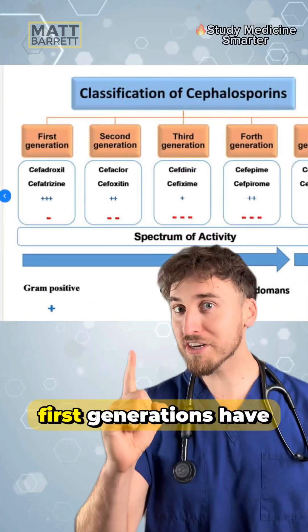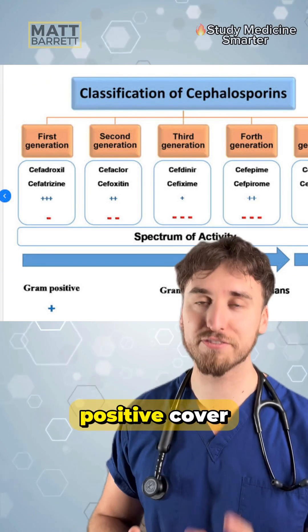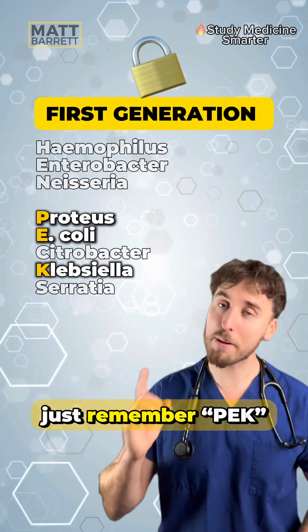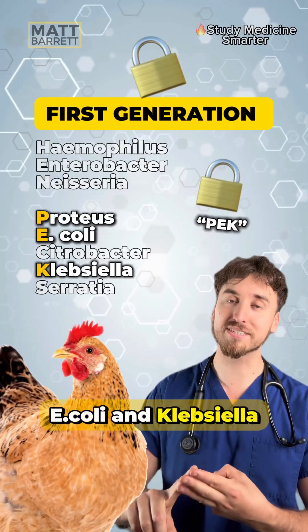Remember that the first generation has the most gram-positive cover. Just remember PEC: Proteus, E. coli, and Klebsiella.